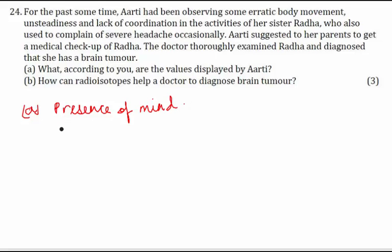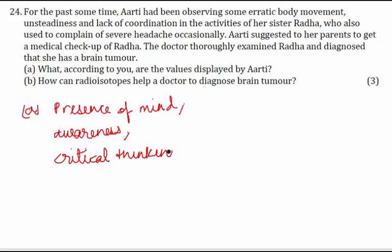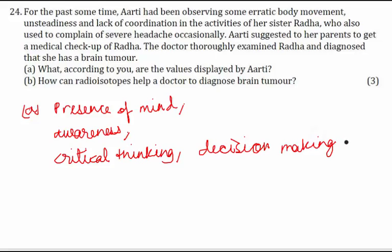Then we can talk about awareness — she was aware, and that is why she had asked for a diagnosis. Critical thinking can be one. And some other skills like decision making and persuasive power. We can also write a caring nature and all those things.